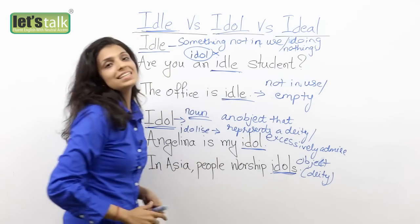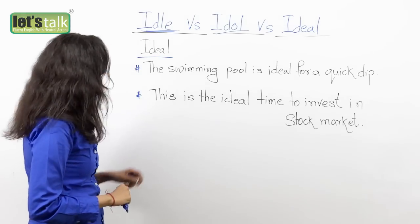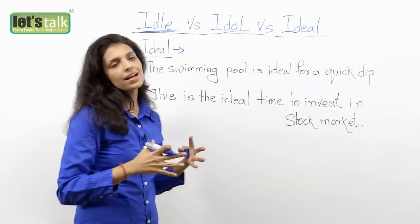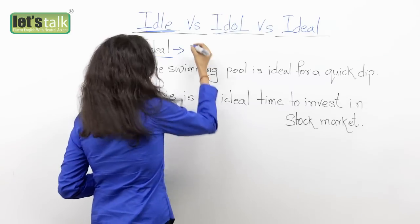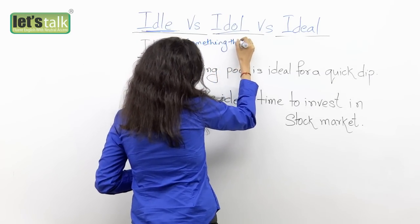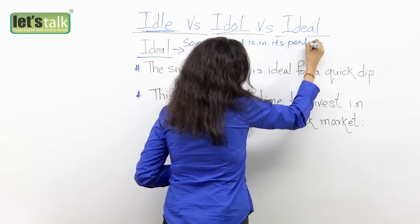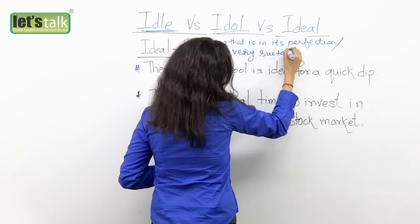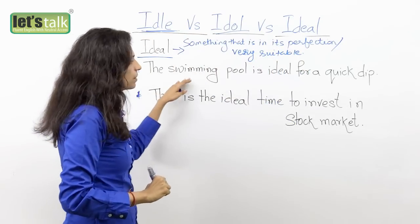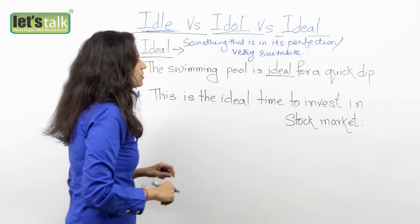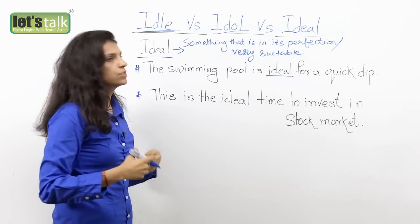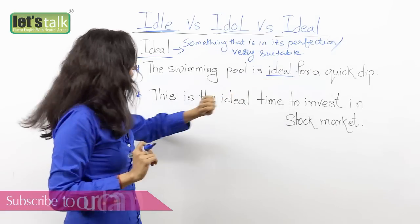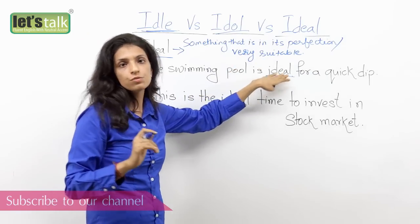Now we are going to take a look at how to use 'ideal.' So now we've seen what idle and idol meant. Ideal — that's I-D-E-A-L. What is ideal? Something that is in its perfection or that is most suitable. For example: 'The swimming pool is ideal for a quick dip.' Just supposing you're really tired and you have a half-hour lunch break, and near your office there's a swimming pool. You could dive in quickly for five minutes — how invigorating you would feel. So it is ideal — it is the best option, the perfect thing to do for a quick dip.